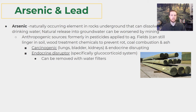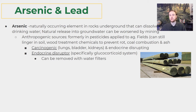Arsenic is a carcinogen known to cause lung, bladder, and kidney cancer. It's also an endocrine disruptor, specifically in the glucocorticoid system, which is responsible for regulating blood glucose levels. The good news is that you can try to protect yourself from arsenic with a quality water filter — as is also the case with lead. So if you're looking to reduce your exposure to both of these heavy metals, researching and investing in a decent water filter might be a good idea.